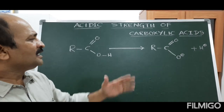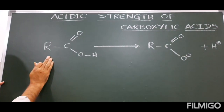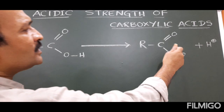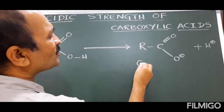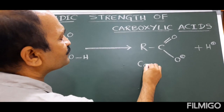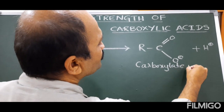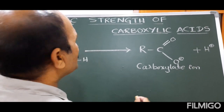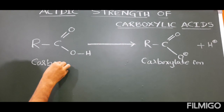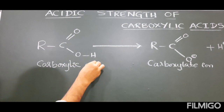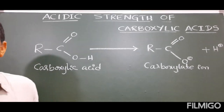Let's see. This is the carboxylic acid. On ionization, you are getting RCOO⁻ and H⁺. This is the carboxylate ion. Now there is a comparison among alcohols and phenols — alcohols are less acidic and phenols are more acidic.